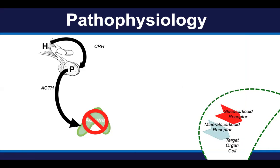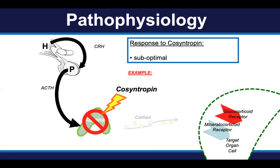If you were to give patients with primary adrenal insufficiency exogenous ACTH — sometimes referred to as cosyntropin — which is a large amount of ACTH to stimulate the adrenal glands, there is a suboptimal production of cortisol, because the adrenal glands are the target of this disorder.